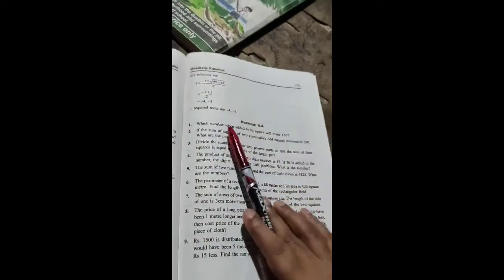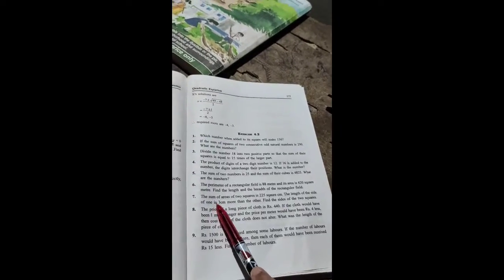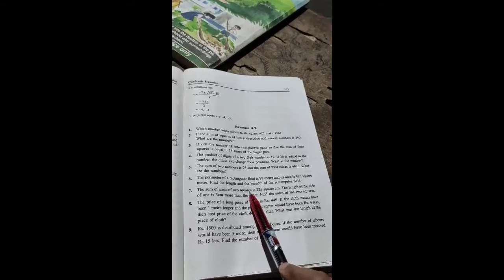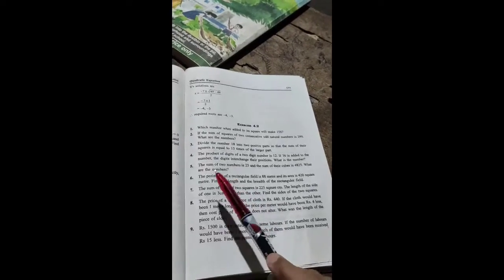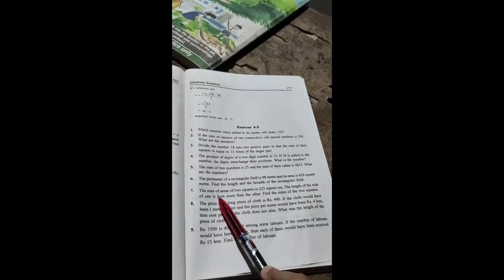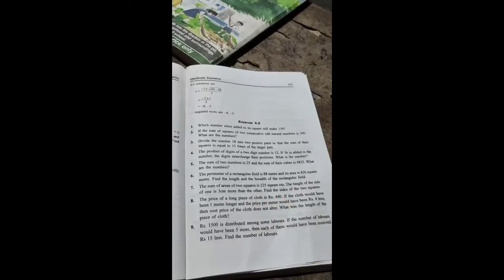Hello students, we'll continue our exercises 4.2 today. I will do question number seven. The sum of areas of two squares is 225 square centimeters. The length of the side of one is three centimeters more than the other. Find the sides of the two squares.